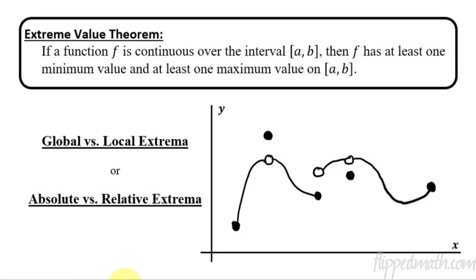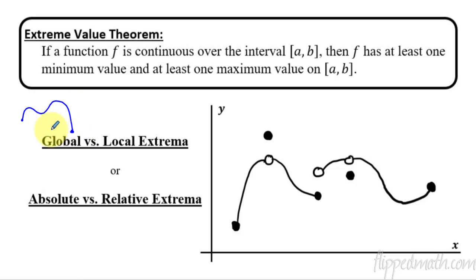So we have this thing called an extreme value theorem. It's pretty common sense, and that is if you have a function over an interval a to b, and it's continuous, you would have to have at least one minimum and one maximum. If I have some function that goes down, you can see I have a maximum there—in fact, I have two—and then some different minimum points. That's what this theorem says: you've got to have at least one.